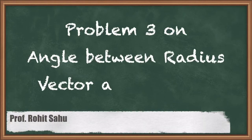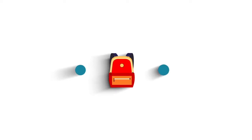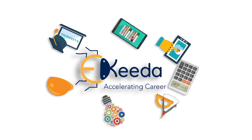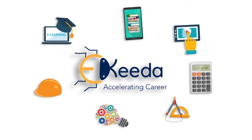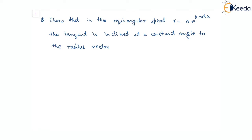Hello friends. In this session we'll see the third question on the topic of angle between radius vector and tangent. We have to show that in the equiangular spiral with a given equation, the tangent is actually inclined at a constant angle to the radius vector. For the polar curve given here, that is r equal to a times e to the power of theta times cot of alpha, where alpha is a constant.